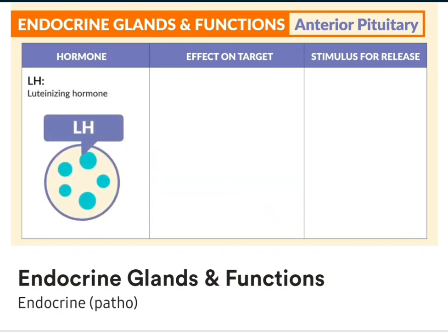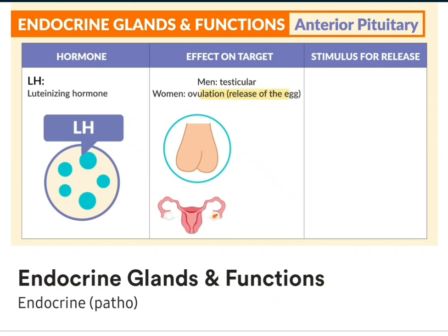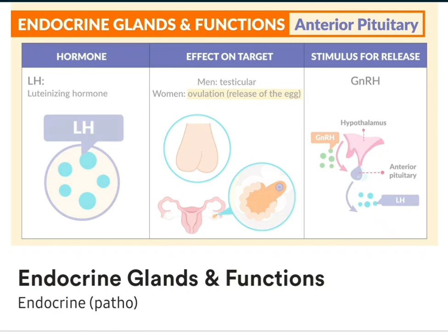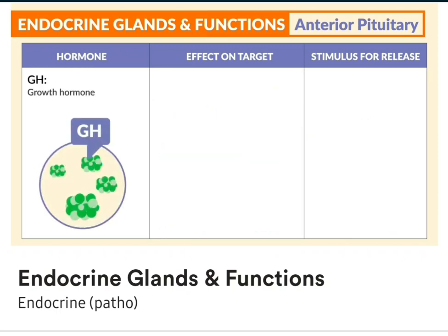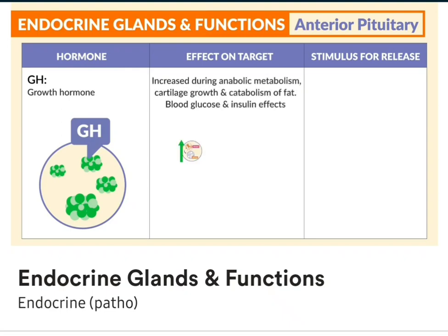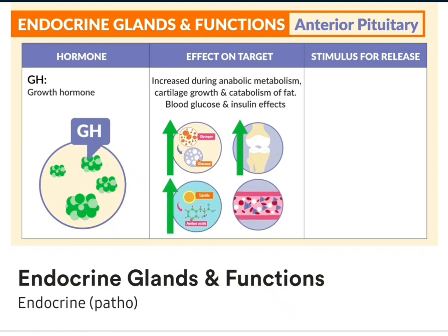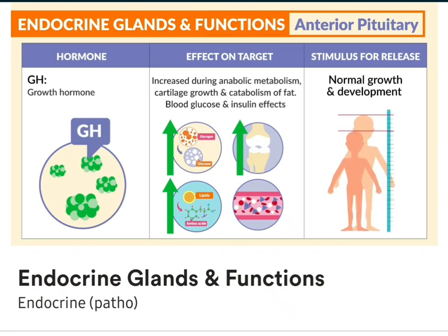Next is LH, the luteinizing hormone. For men, its function is testicular, and for women, it plays a key role in ovulation, the release of the egg. The stimulus is GNRH once again. Next is GH, growth hormone. This increases during anabolic metabolism, as well as cartilage growth, catabolism of fat, and blood glucose and insulin effects. Its stimulus is normal growth and development.